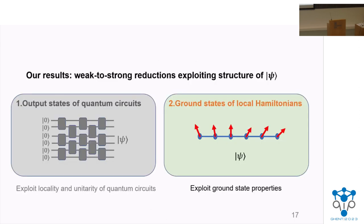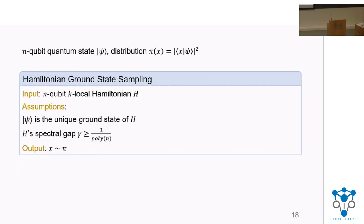This concludes our discussion of the gate-by-gate algorithm. We now switch gears to talk about weak-to-strong reductions for sampling from the ground state distribution of local Hamiltonians. In this setting, we assume the state |ψ⟩ is the unique ground state of a k-local Hamiltonian H, where k is a constant. Furthermore, we assume H has an inverse polynomial spectral gap, and the goal is to sample from the ground state distribution π.